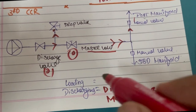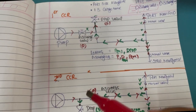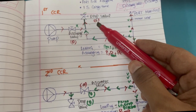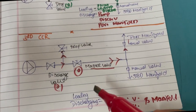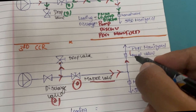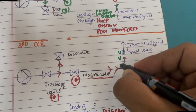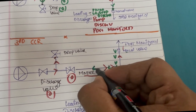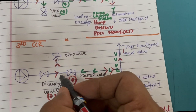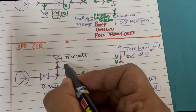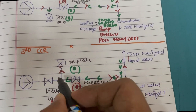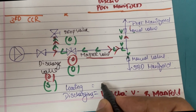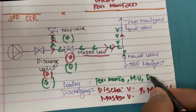The master valve is not present on all ships — I've seen it on very few ships. It is an extra valve. On the other two ship types, we only had two valves: drop and discharge. In the third type, there is an extra master valve. For loading on this type: open port side manifold valve, cargo comes in, keep the discharge valve shut, open the master valve, and open the drop valve. So for loading: port manifold, master valve, and drop line.